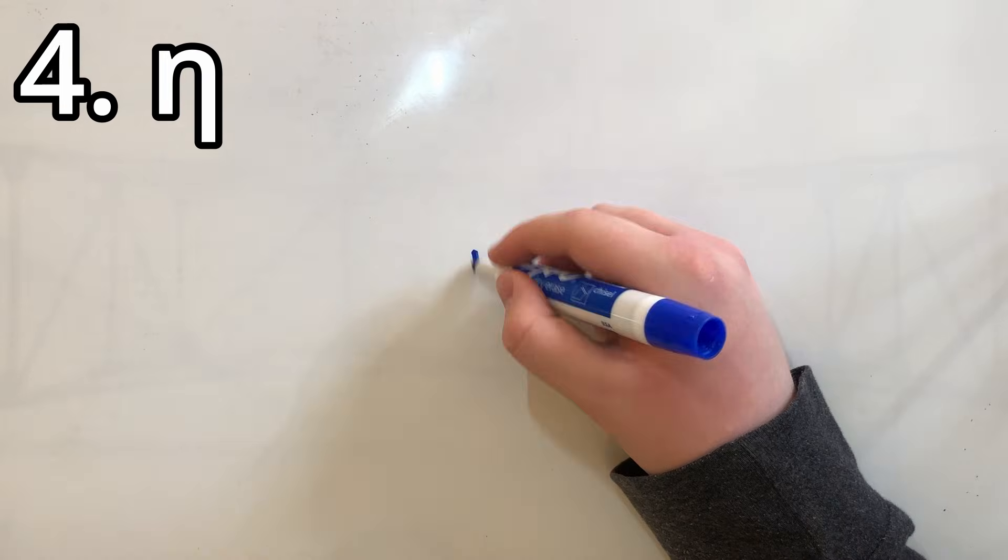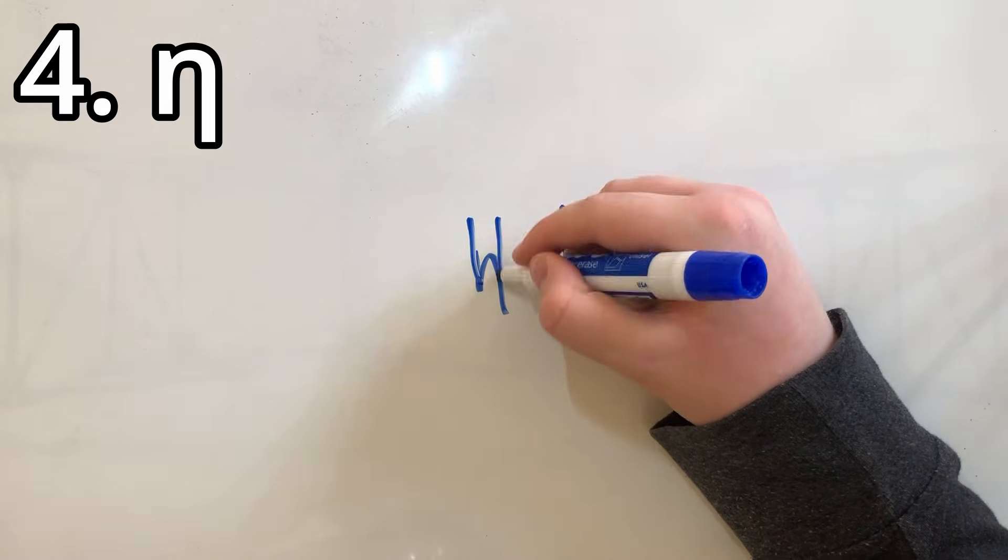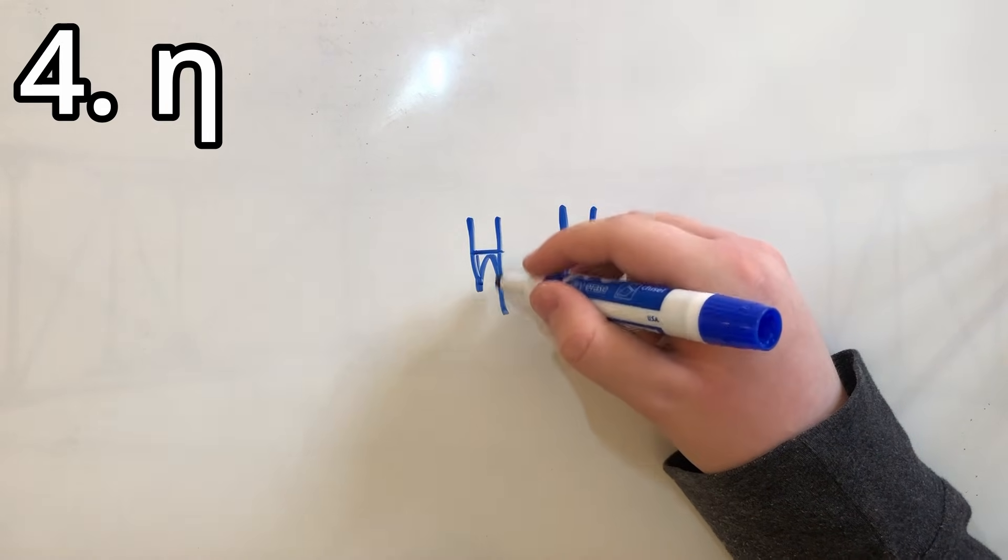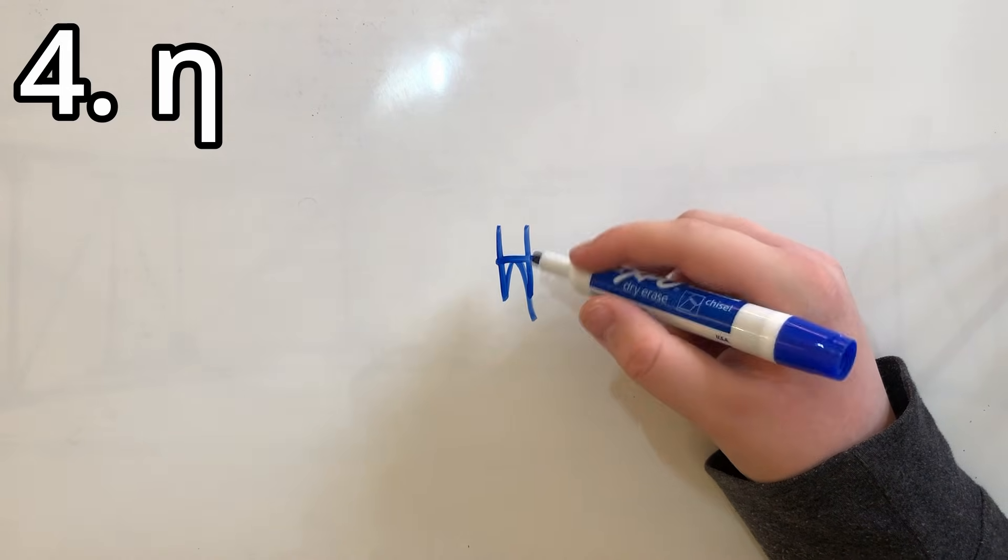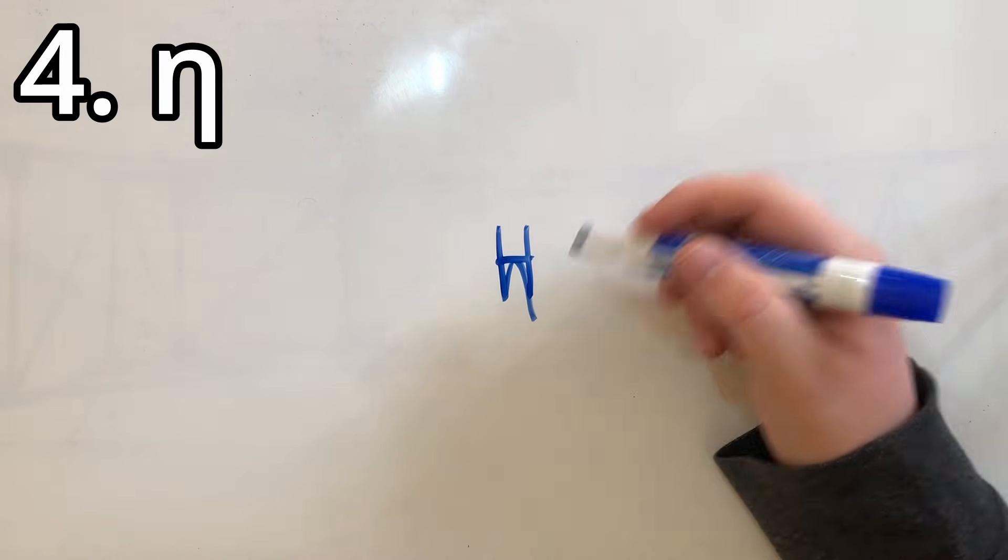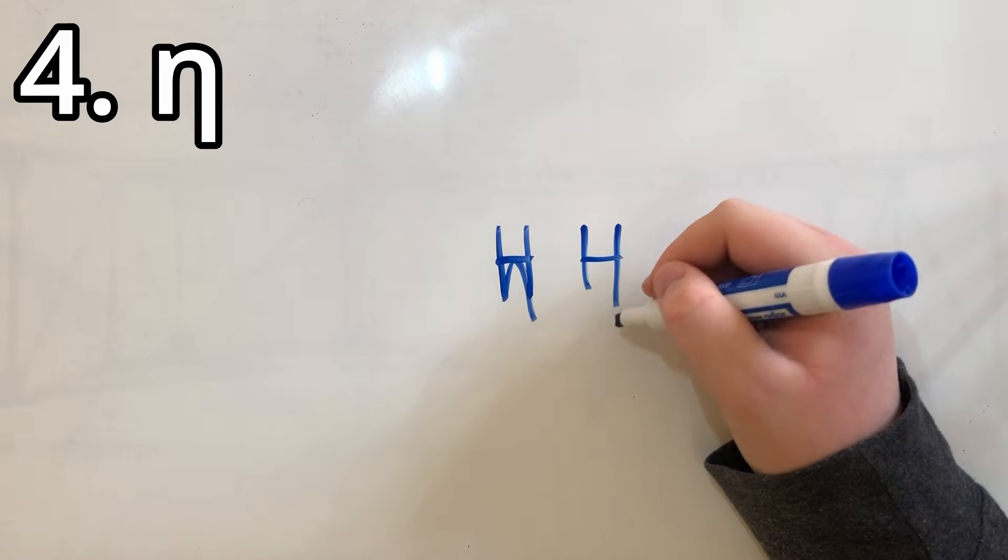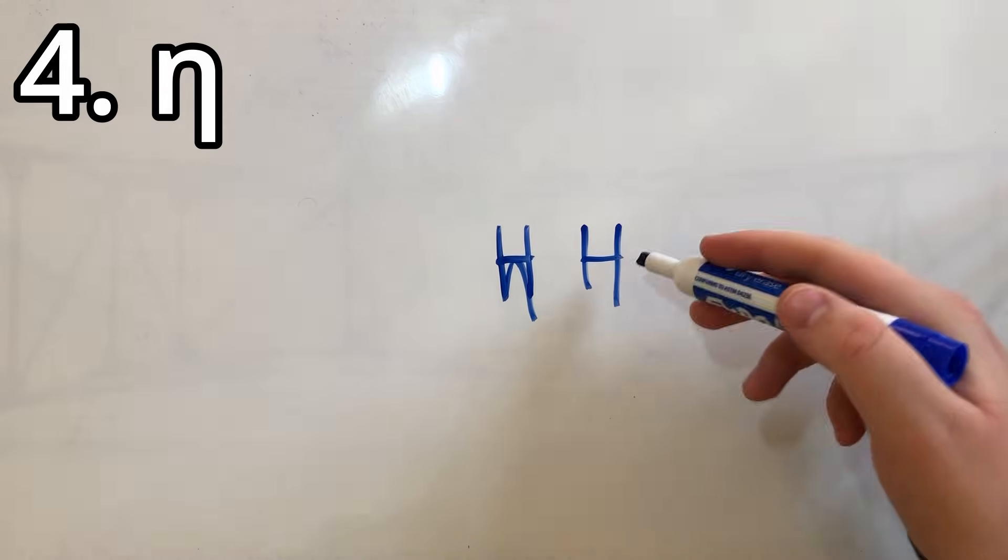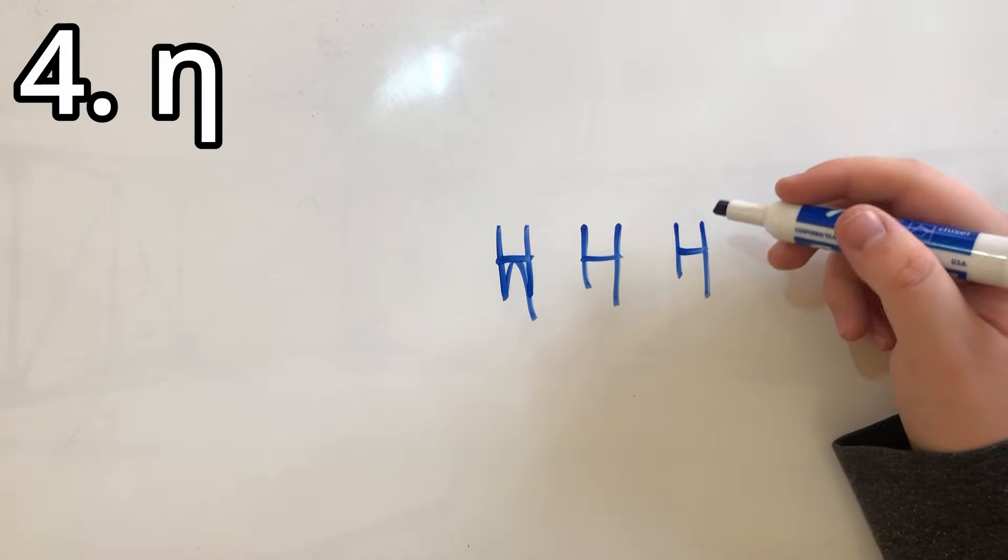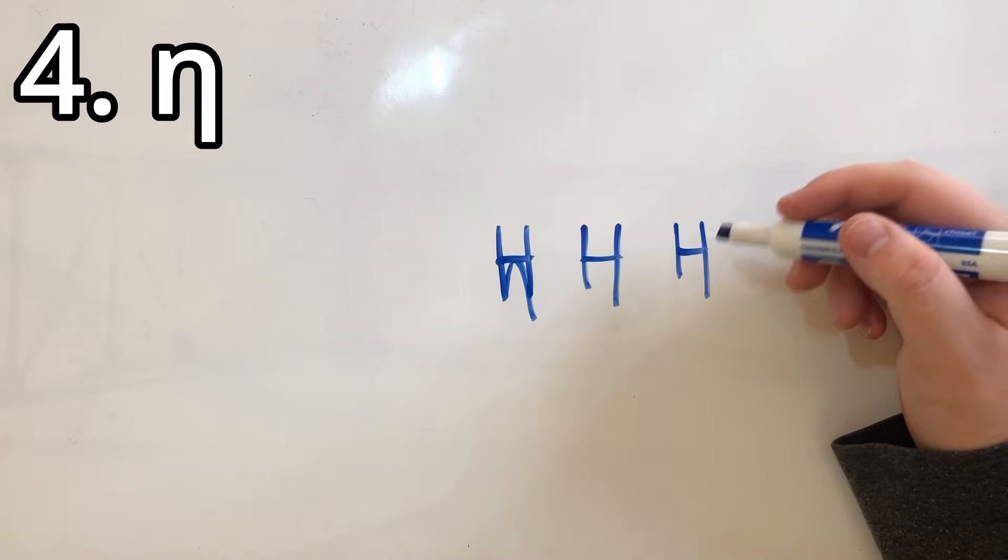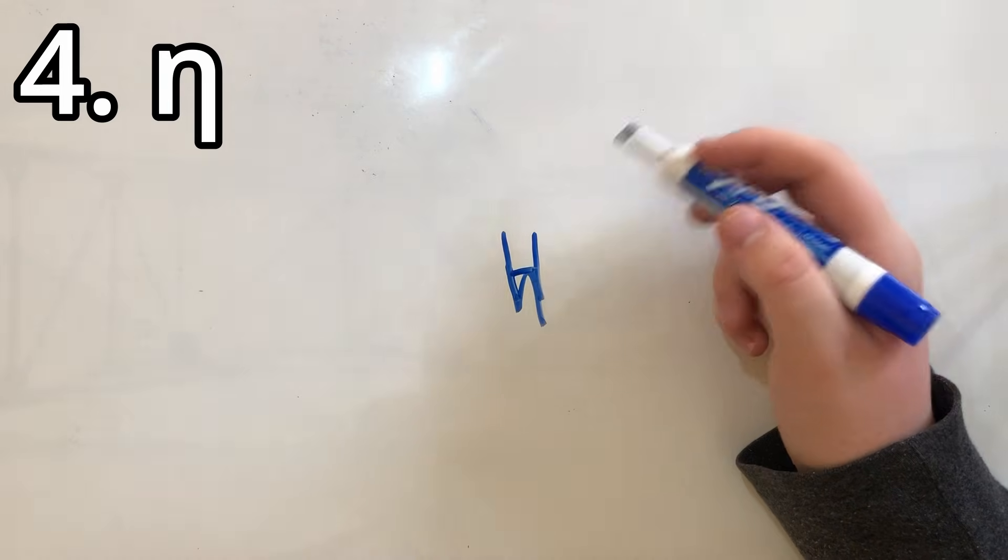Spot number four goes to eta, which is kind of just like H from English, except eta has this little thing sticking out the bottom. So you kind of got a remnant from the lowercase version. But it still looks like a capital eta. It's not that big of a deal. I'm sure somebody's done something like that when writing a capital H or a capital eta before.